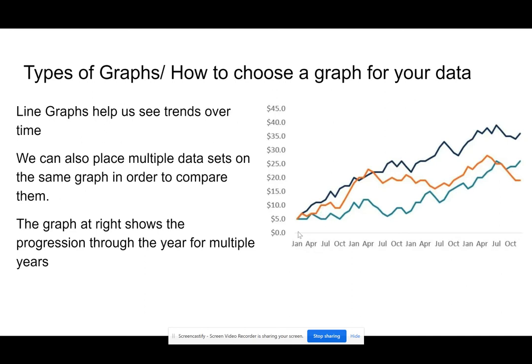Here we have a graph where we have the progression through the year in months, and we have multiple years graphed on the same graph so we can compare the years. This gives us a really good idea about what's happening throughout the year and what's happening between years.